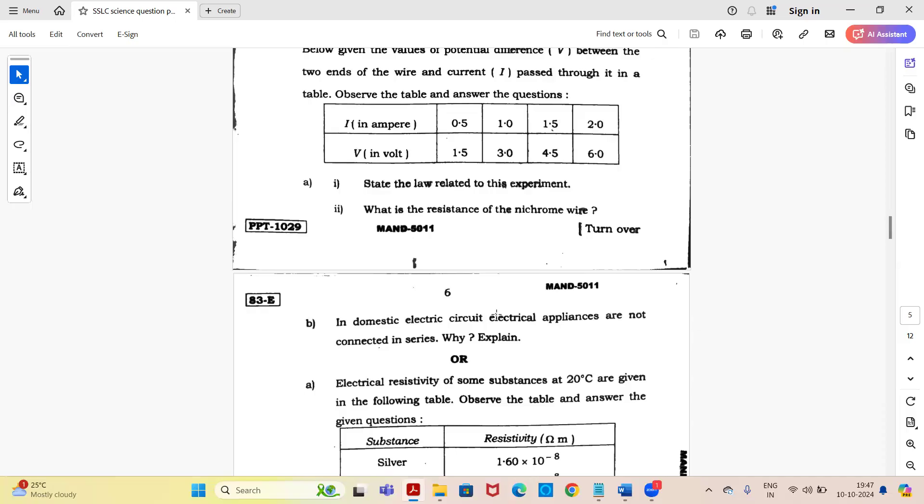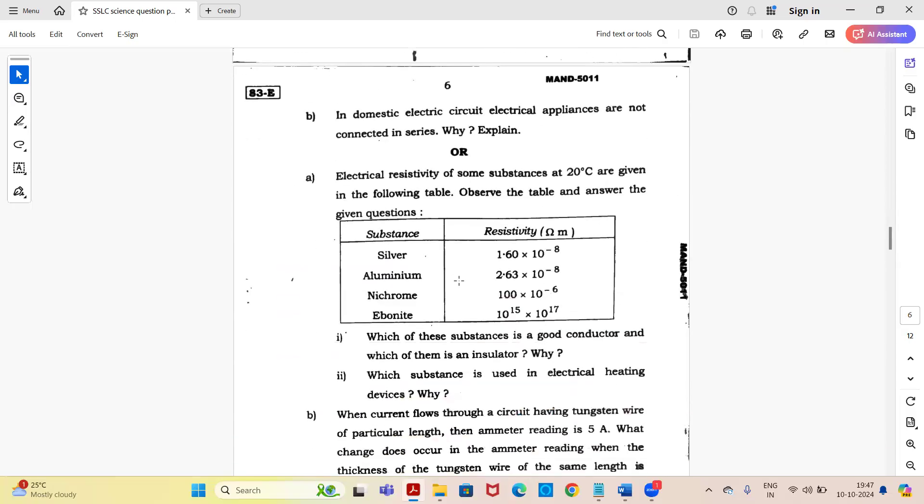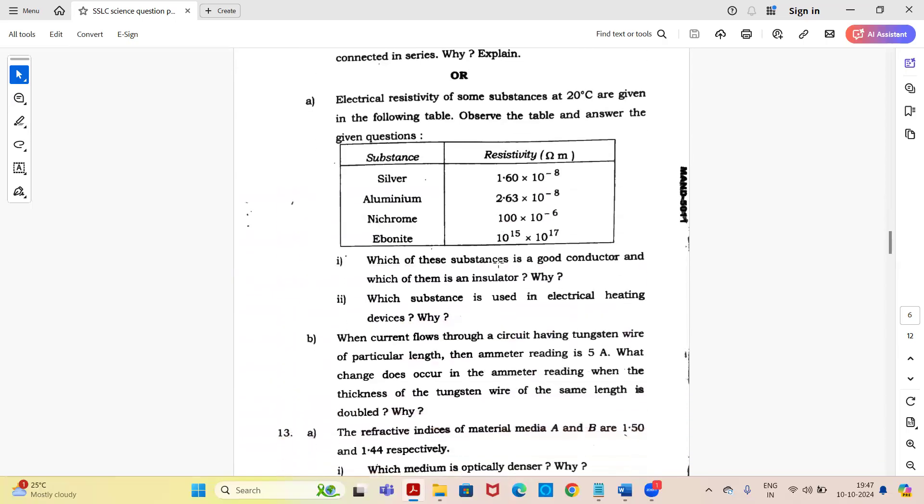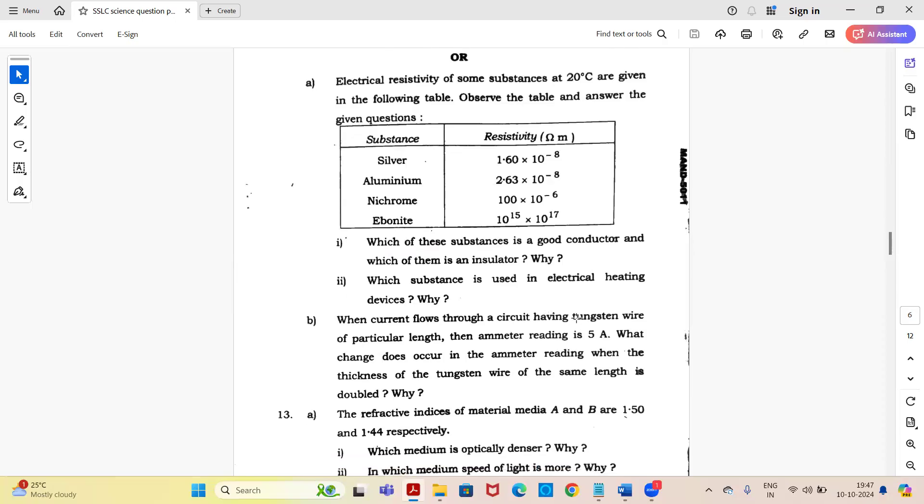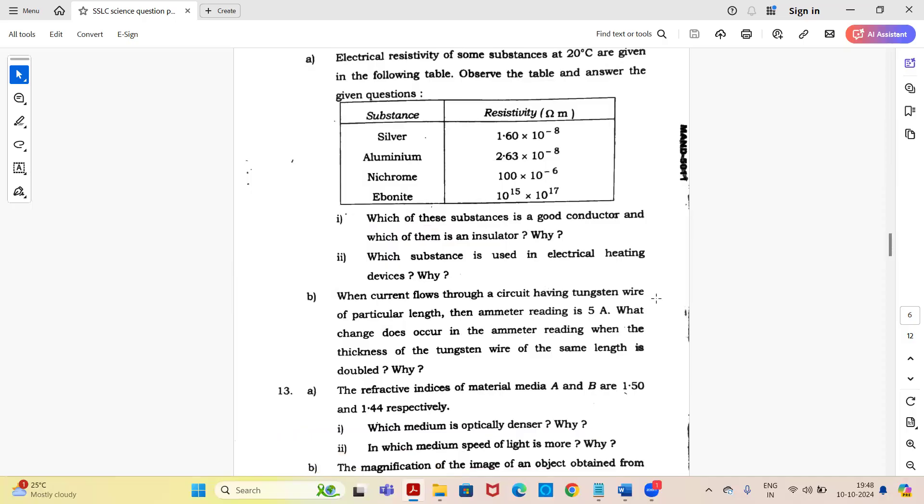Or here you have an option. Electrical resistivity of some substances at 20 degrees Celsius are given in the following table. Observe the table and answer the given questions. Substances are given: silver, aluminum, nichrome and ebonite with their resistivity. Which of these substances is a good conductor and which is an insulator, why? Which substance is used in electrical heating devices, why? When current flows through a circuit having tungsten wire of particular length then ammeter reading is 5A. What change occurs in the ammeter reading when thickness of the tungsten wire of the same length is doubled, why?